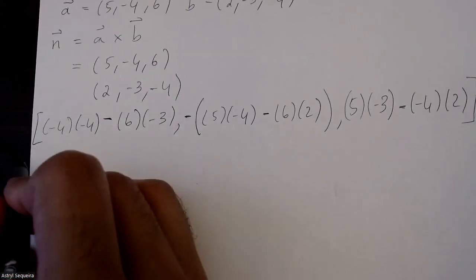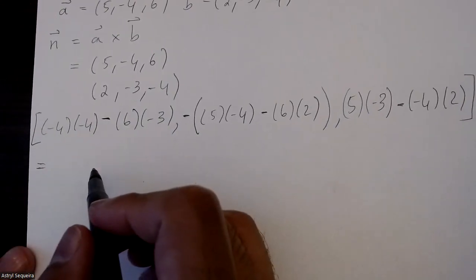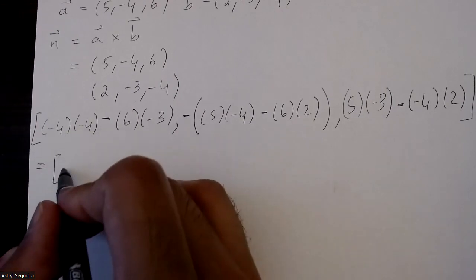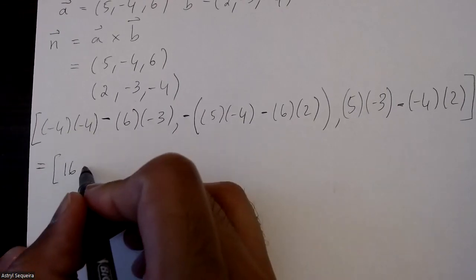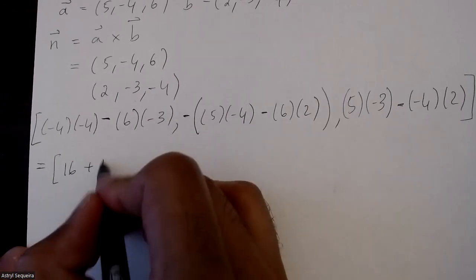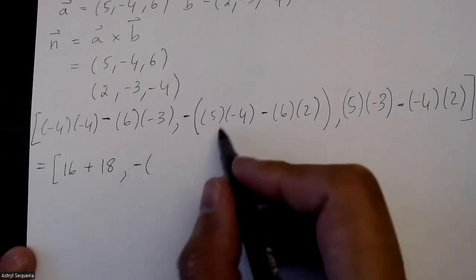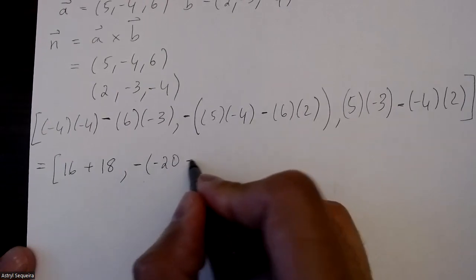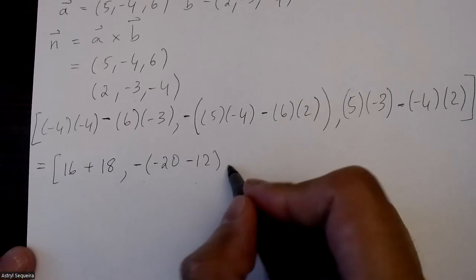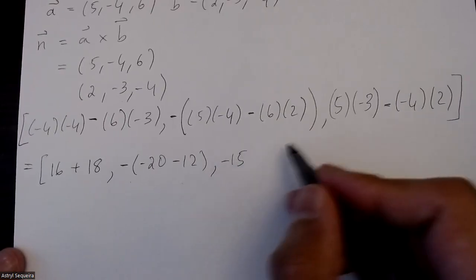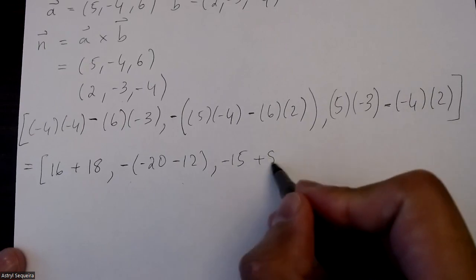So now I'll just calculate my x, y, and z components. This is just 16 plus 18. This is negative 20 minus 12. And the last one is negative 15 plus 8.